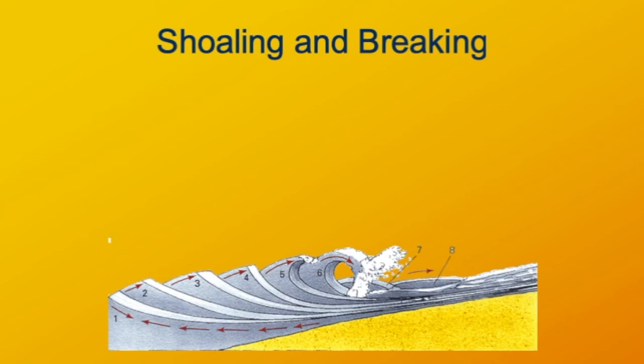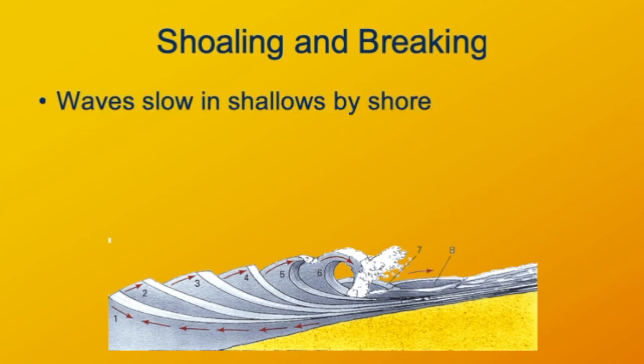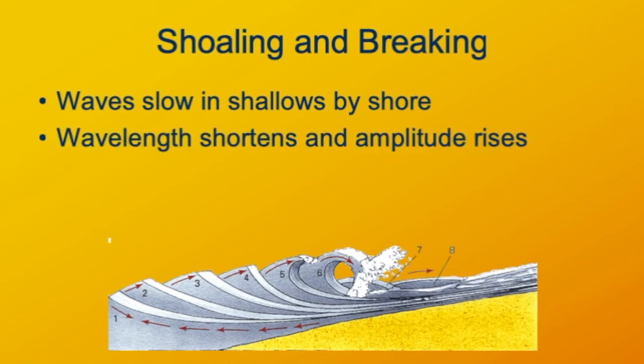So what this is showing is the different steps in the breaking of a wave. In the shallows by the shore, the waves start to slow down. And when that happens, the wavelength will shorten and the amplitude is going to rise because there's still the same amount of energy in the wave.